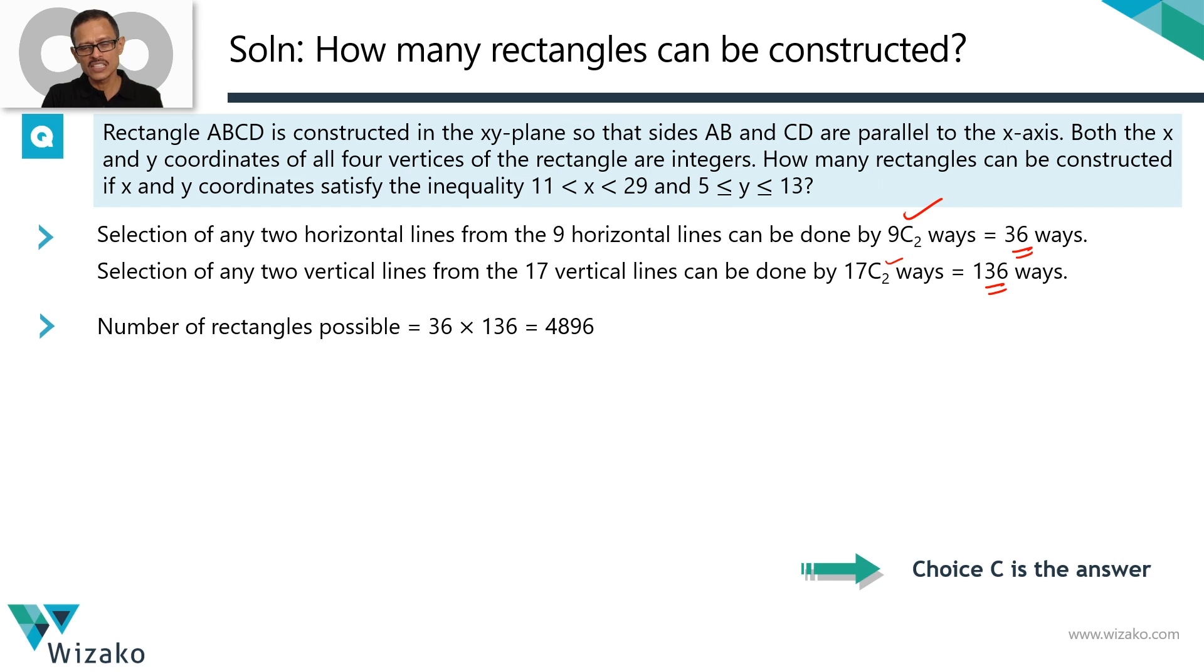So answer is going to be 36 into 136. This calculation actually looks a little daunting. Not so much. 36 into 136, I'll write it as 100 plus 36. So 36 into 100 is 3600. 36 into 36, I know is 1296.